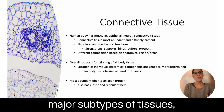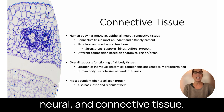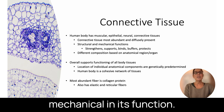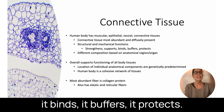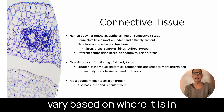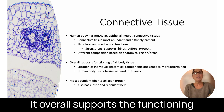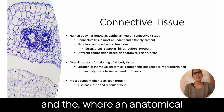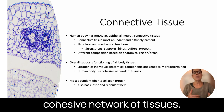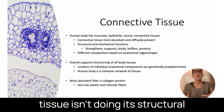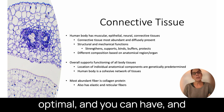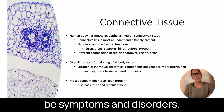The human body has four major subtypes of tissues — muscular, epithelial, neural, and connective tissue — but connective tissue is by far the most abundant and diffusely present. It is structural and mechanical in its function: it strengthens, supports, binds, buffers, and protects. Its composition with regards to the fibrillar collagens and the extracellular matrix can vary based on where it is in the body. When connective tissue isn't doing its structural job, cellular signaling is not as optimal, and the result can be symptoms and disorders.